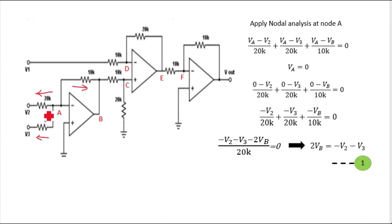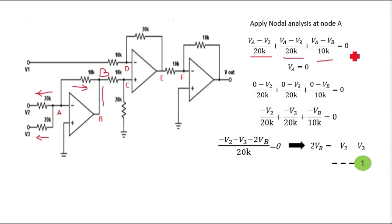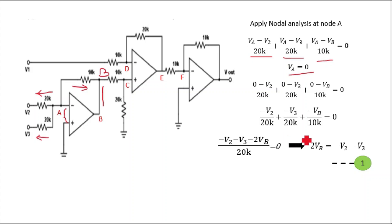So: (VA − V2)/20K + (VA − V3)/20K + (VA − VB)/10K = 0, considering all outgoing currents. Now due to virtual ground between the non-inverting and inverting terminals, VA will be zero. Putting VA = 0: (0 − V2)/20K + (0 − V3)/20K + (0 − VB)/10K = 0. Solving: −V2/20K − V3/20K − VB/10K = 0.